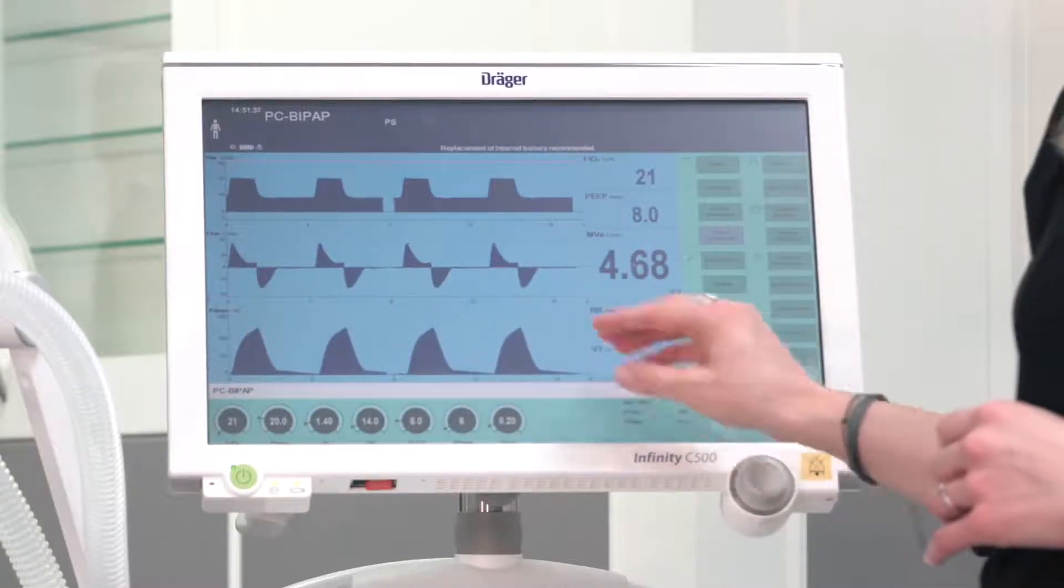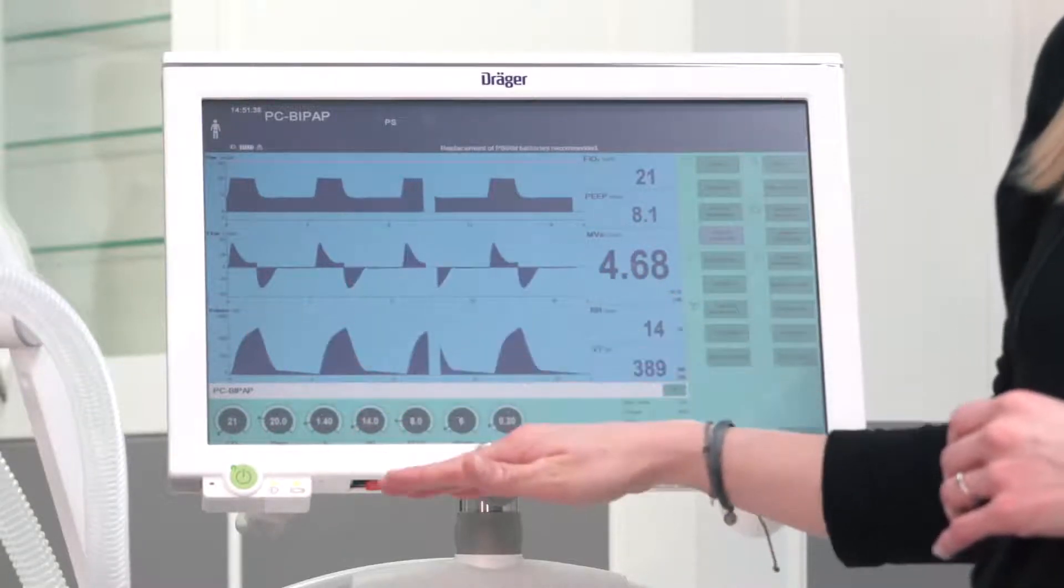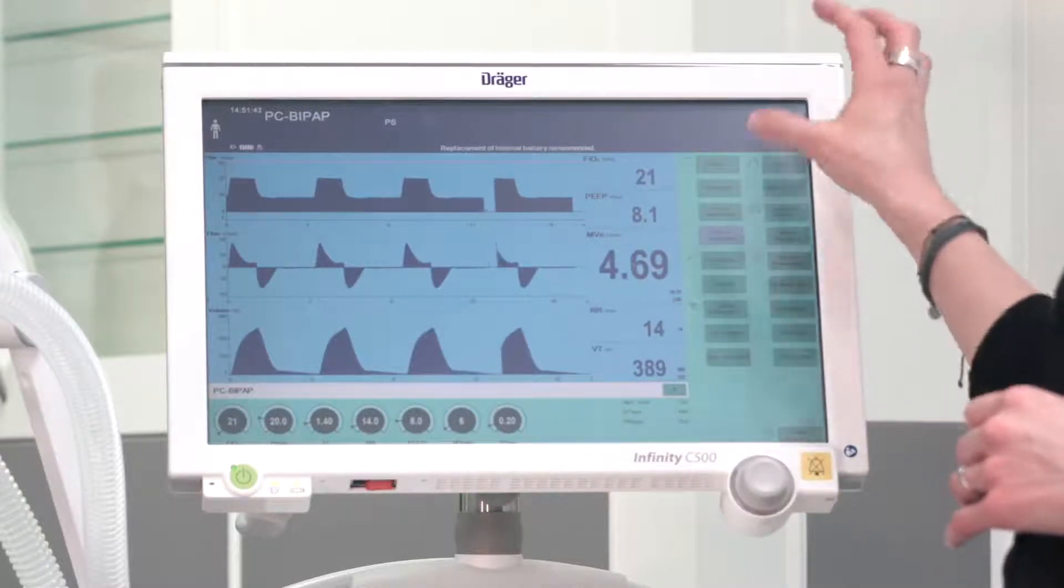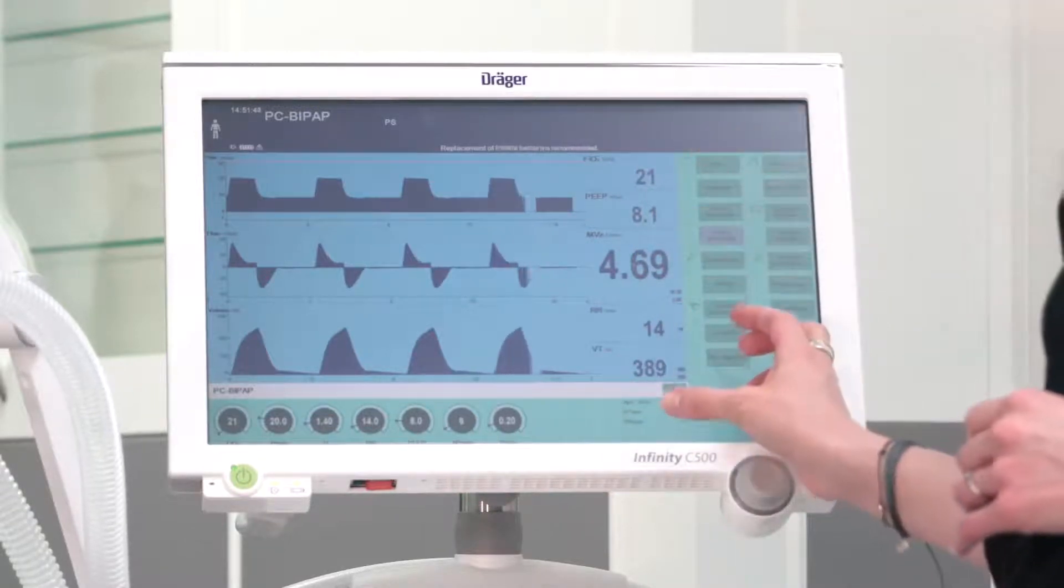In the lower part you can see your ventilation modes and your setting controls. On the right hand side you have further submenu structures and function keys.